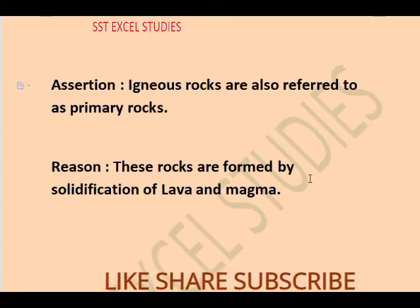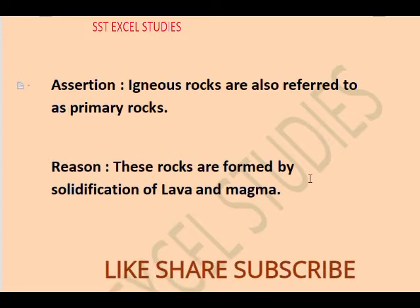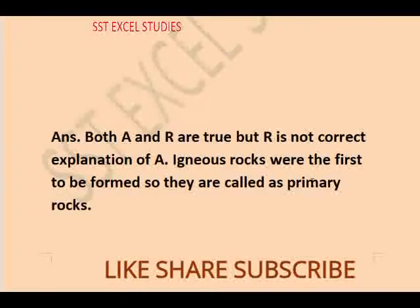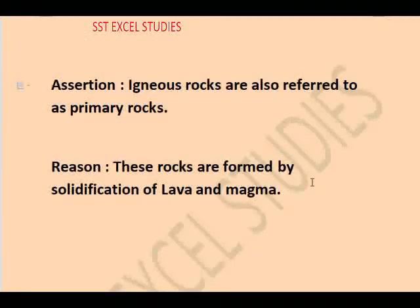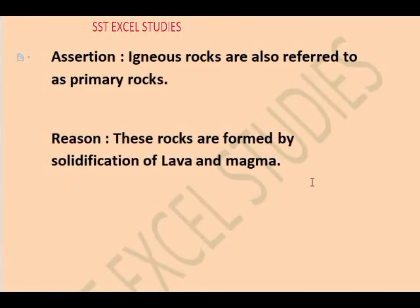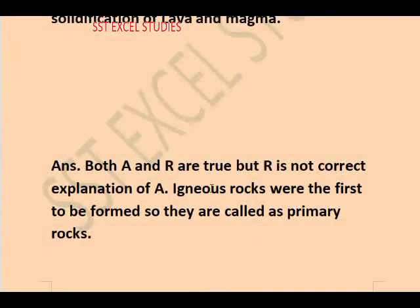The next assertion is that igneous rocks are solid. The reason provided is: these rocks are formed by solidification of lava and magma. The statement is correct, but the answer is: both A and R are true, but R is not the correct explanation of A. The reason does not fully answer the assertion, because the primary rocks are not exclusively made from lava and magma.